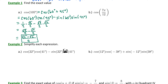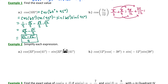Let's try one in radians. We want to evaluate cosine of 7π/12 exactly. 7π/12 is not a common angle on the unit circle, so we attempt to express it as a sum. With a little trial and error, we find that π/3 plus π/4 equals 7π/12: converting to a common denominator of 12, π/3 becomes 4π/12 and π/4 becomes 3π/12, and 4π/12 plus 3π/12 equals 7π/12. So we expand cosine(7π/12) as cosine(π/3 + π/4).